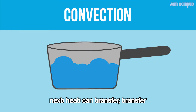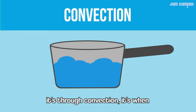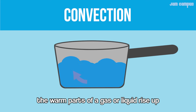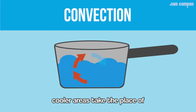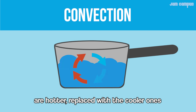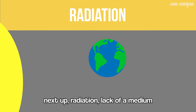Next, heat can transport through convection. It's when gases and liquids move — most efficient. The warm parts of the gas or liquid rise up; cooler areas take their place, like boiling water — those bubbles rise and are replaced by the cooler ones.